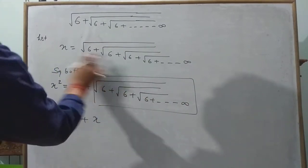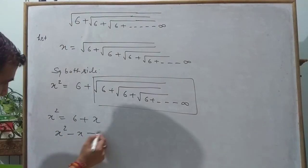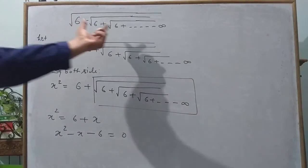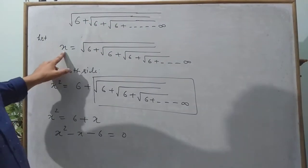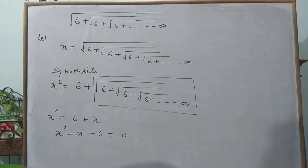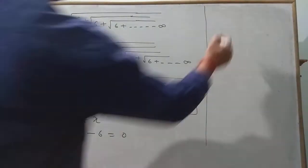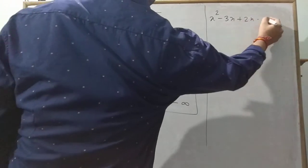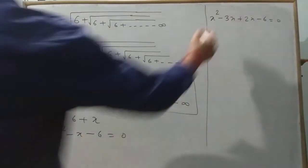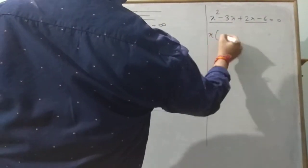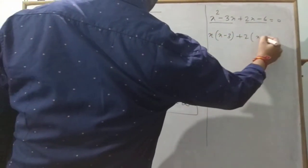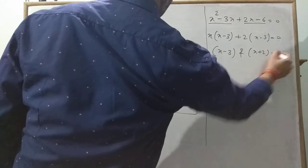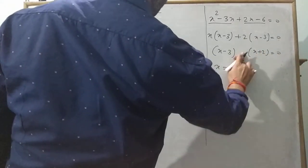So it becomes x² = 6 + x. Now x² − x − 6 = 0, forming a quadratic equation. Previously there was no quadratic, but by putting equal to x and squaring both sides we get a quadratic. Simplifying by splitting the middle term: x² − 3x + 2x − 6 = 0, giving (x − 3)(x + 2) = 0.